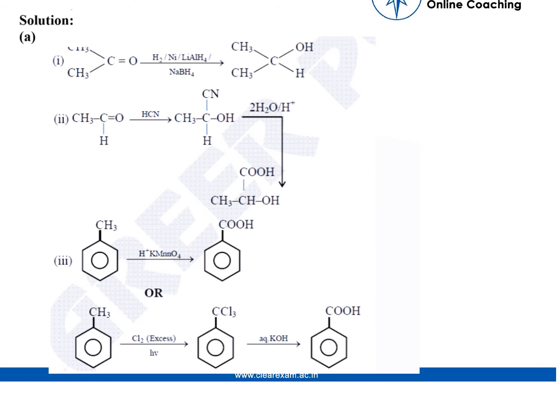Solution: (a)(i) Propanone can be converted to propan-2-ol by H2/Ni and LiAlH4, or NaBH4.